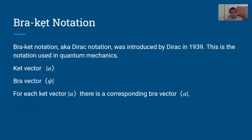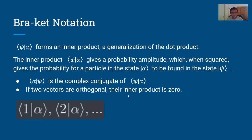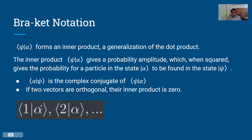Next we'll review some key bra-ket notation used to represent vectors and states in quantum mechanics. You have the ket vector, represented by the right angle bracket, and the bra vector, represented by the left angle bracket. For each ket vector there is a corresponding bra vector. Combining them gives bracket notation — this is a dot product or inner product applicable to both real and complex vectors. The inner product gives a probability amplitude, which you square to get the probability of a particle being in that state.